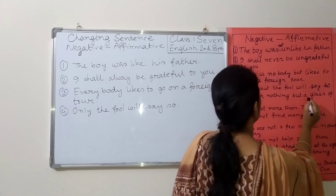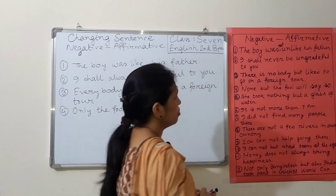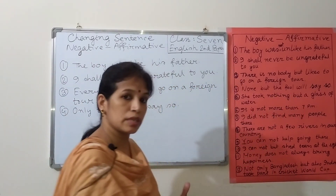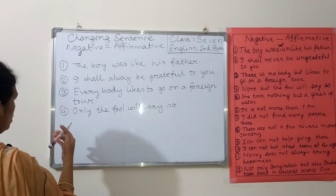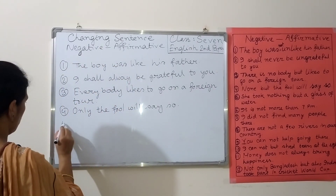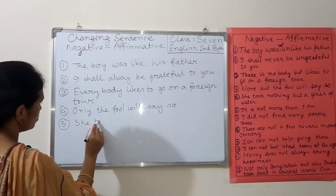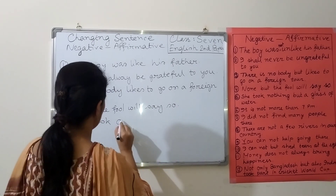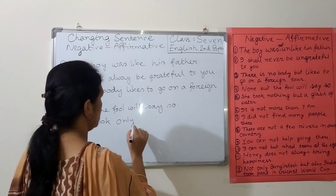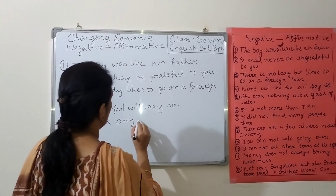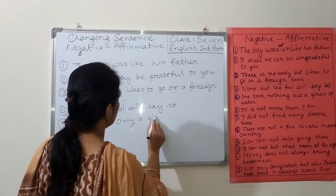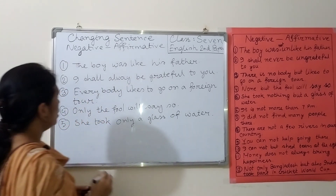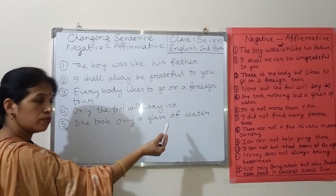Number five: 'She took nothing but a glass of water.' Here we can see the negative sign 'nothing but,' which refers to the name of something. That's why we have to use 'only' here as well. Instead of 'nothing but,' we use 'only.' The affirmative sentence is: 'She took only a glass of water.'